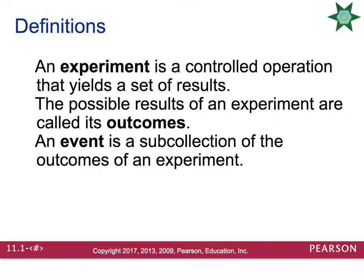A couple definitions you need to know. First is experiment. An experiment is going to be a controlled operation that yields a set of results. For example, when doctors perform experimental testing to see if a drug can cure cancer, that's an experiment. The possible results of an experiment are called its outcomes.